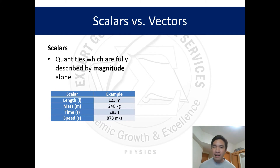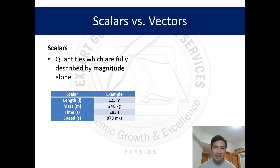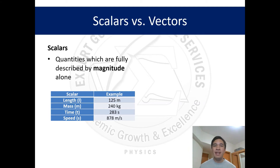The same goes for mass: 240 kilograms — we have the number plus the unit and nothing else, so mass is a scalar quantity. Time: 283 seconds, and speed: 878 meters per second — again these involve just the magnitude and therefore are examples of scalar quantities.